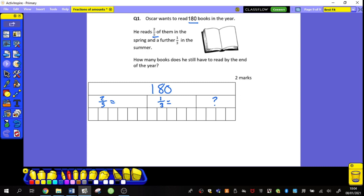First of all, he reads two-fifths of 180 books in the spring. So let's work out what two-fifths are. Let's go 180, split it by the denominator which is 5, which gives me 36. And then I'm going to pick two of them. So 36 multiplied by 2 gives me 72 books. So here he has read 72 books.